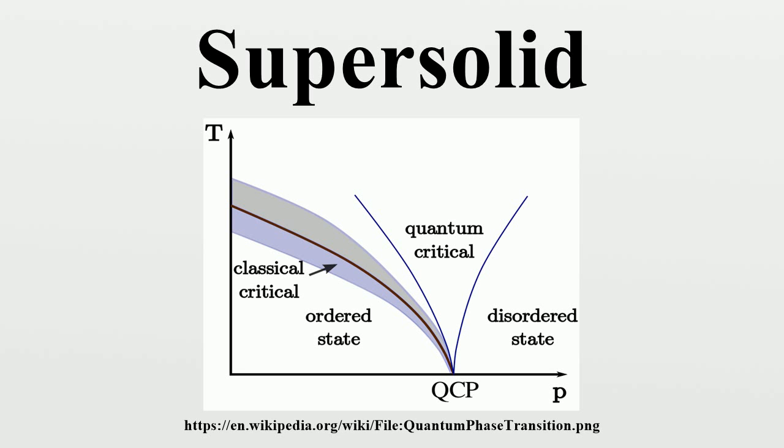Experimental and theoretical work continues in hopes of finally settling the question of the existence of a supersolid. In 2012, Chan repeated his original experiments with new apparatus that was designed to eliminate any contribution from elasticity of the helium. In this experiment, Chan and his co-authors found no evidence of supersolidity. Researchers are continuing to search for conclusive evidence of supersolidity.